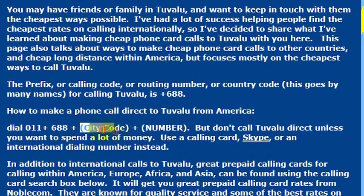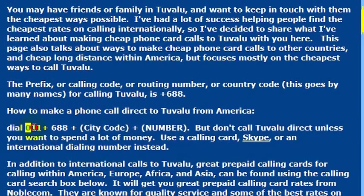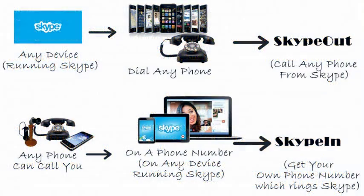The city code is probably included in the phone number you have from a friend. So the full sequence is: 011 for the international dialing code, then 688 for the country of Tuvalu, and then the phone number. One more time — 688 is the country code for Tuvalu.